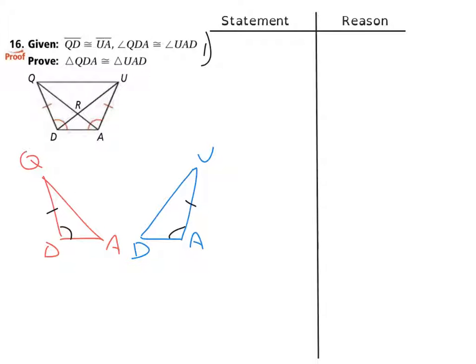we know that side QD is congruent to side UA. I can list all of the given things in a single step with the same justification or reason. So basically you can put a comma there to show that we're moving on to a second piece of information